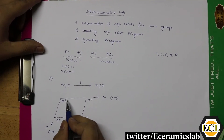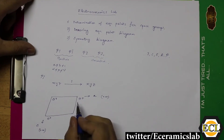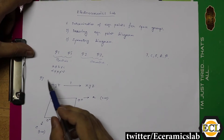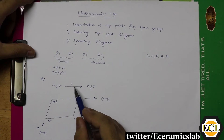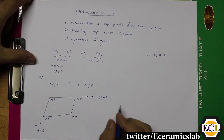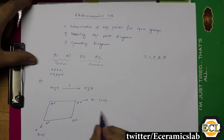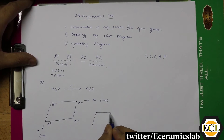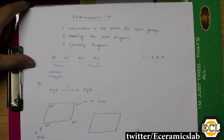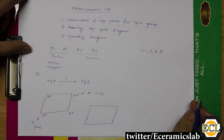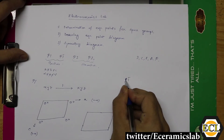A positive sign indicates that the point is above the plane, so Z is plus. If the sign is minus, the point will be below the plane and Z will be minus. Since in the P1 space group there is no symmetry element present, the symmetry diagram will simply show the sign of one in the unit cell.